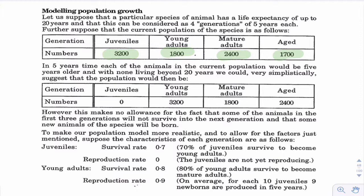Going for a simplistic example here: if everyone just moved along, we'd have these numbers, but that's a really simplistic model — all the aged people die, all the juveniles survive and become young adults, and we don't have any more juveniles. So that's really unrealistic.